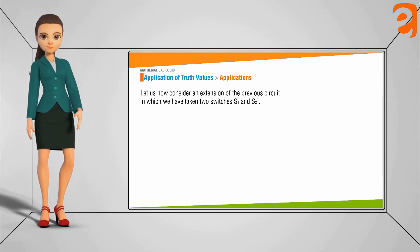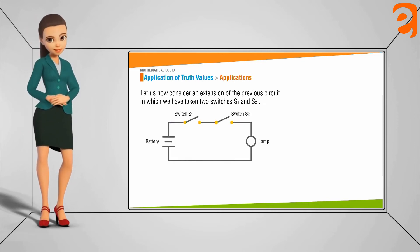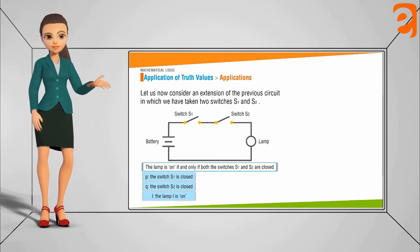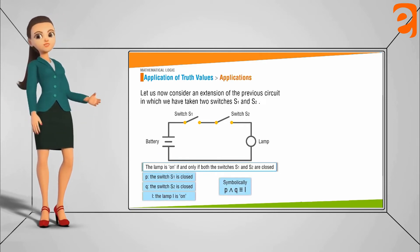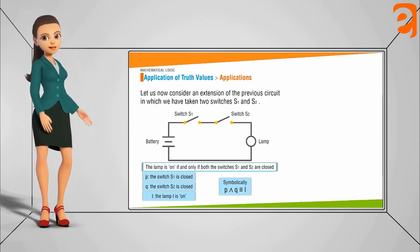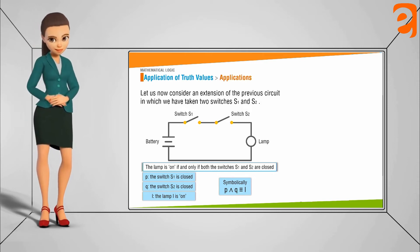Now let us consider an extension of the previous circuit in which we have two switches S1 and S2. Look at the figure here. The switch S1 and S2. So we can say we have two statements P, Q and L. So P is the statement where the switch S1 is closed, Q is the statement where the switch S2 is closed and L is the statement where the lamp L is on.